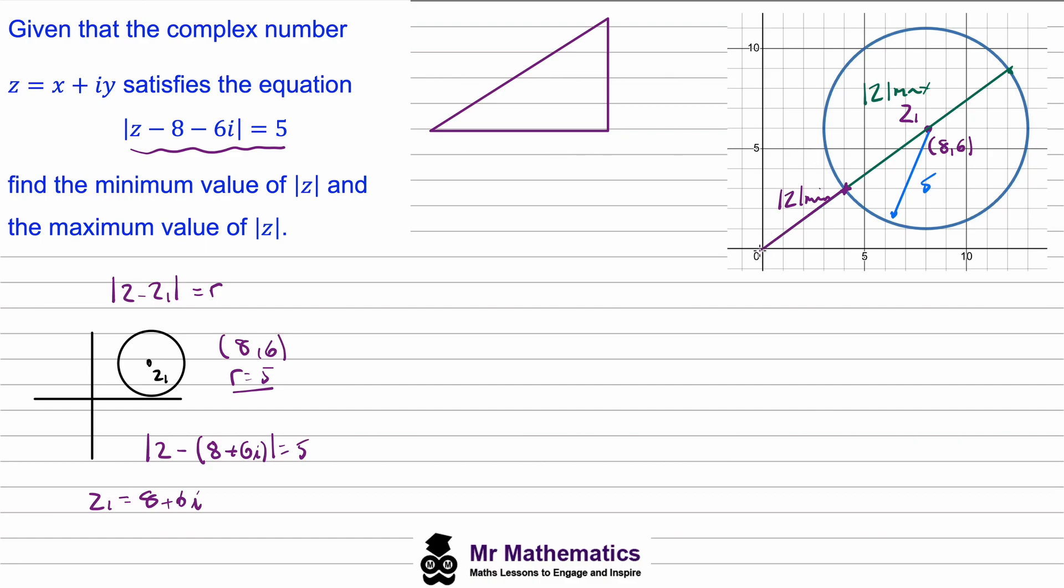We know the base will go from the origin to the center so 8. And we know it will have that perpendicular height of the y value of the center, 6. So the hypotenuse will be the square root of 8 squared plus 6 squared. So this will give us a hypotenuse of 10.